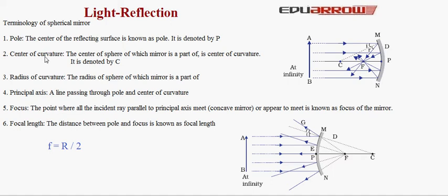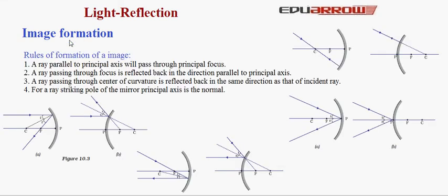Let us now study image formation. To get an image of any point we need two light rays. When these light rays intersect or appear to intersect after getting reflected from the mirror, they meet at a point — that point is the image. Rule 1: a ray parallel to the principal axis will pass or appear to pass through the principal focus. In concave mirror it passes through focus; in convex mirror it appears to come from focus when extended backward.